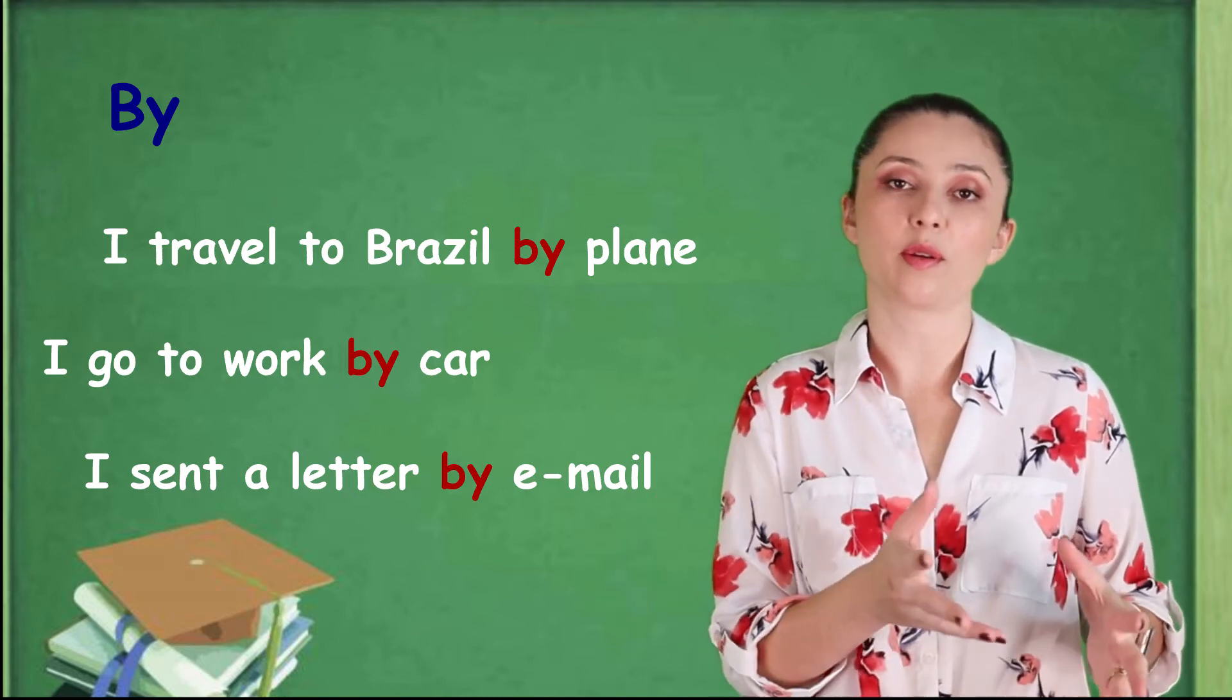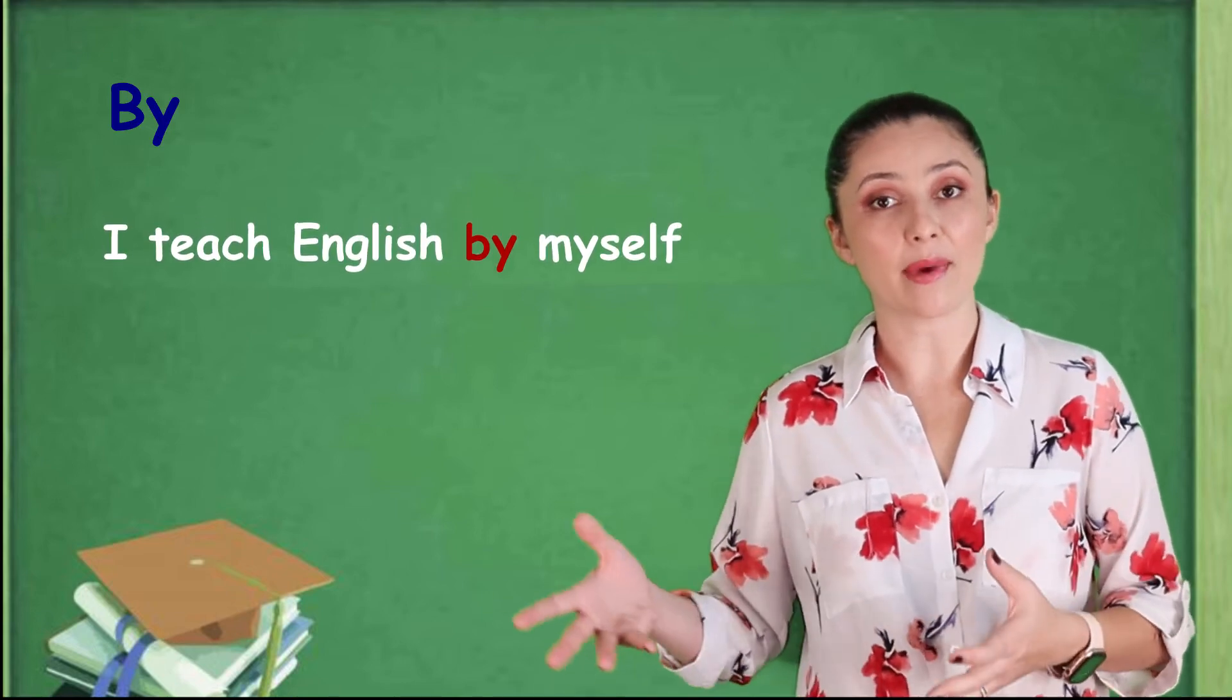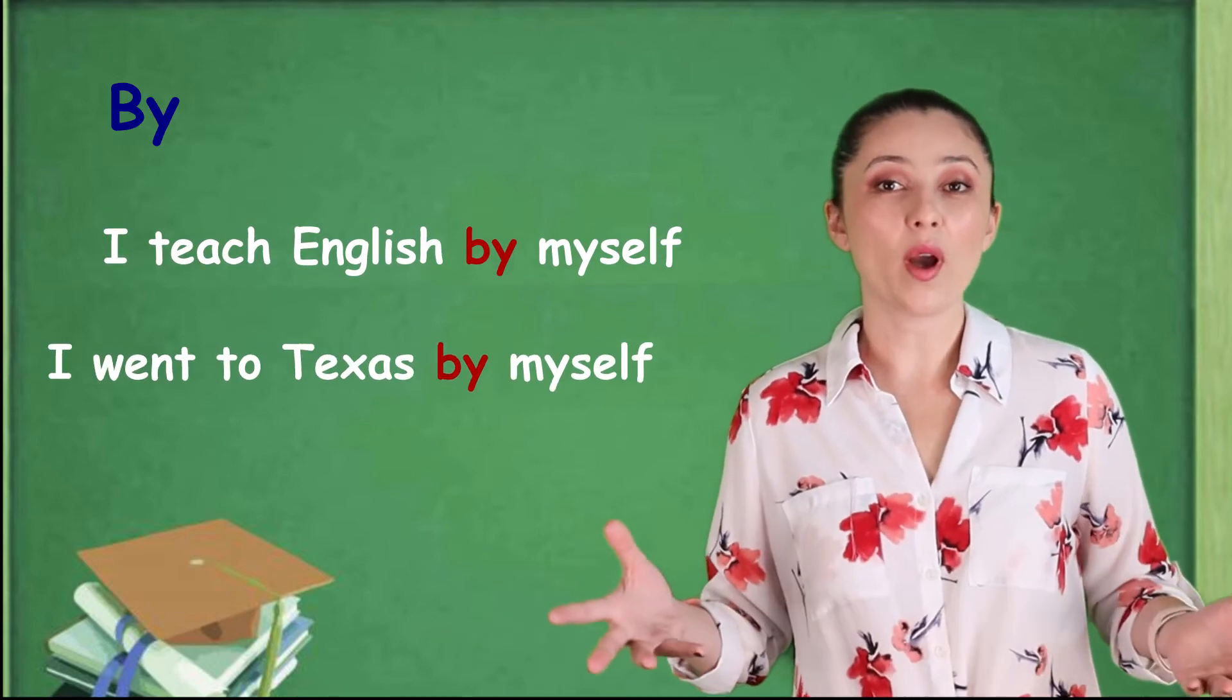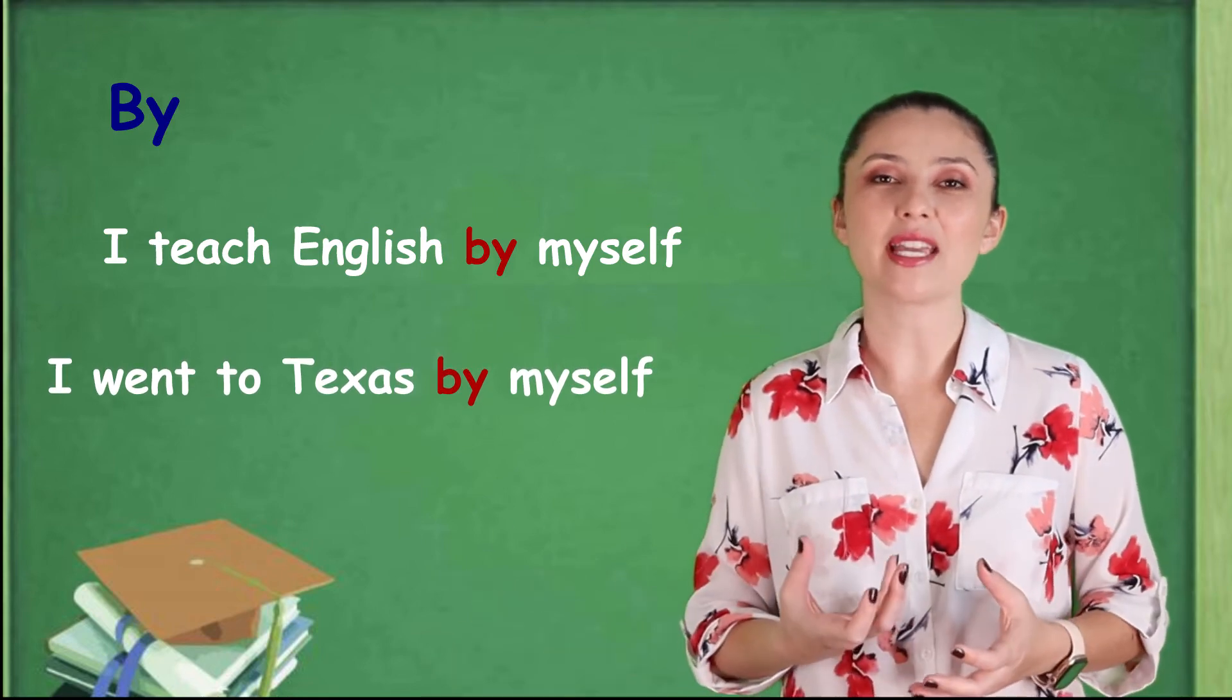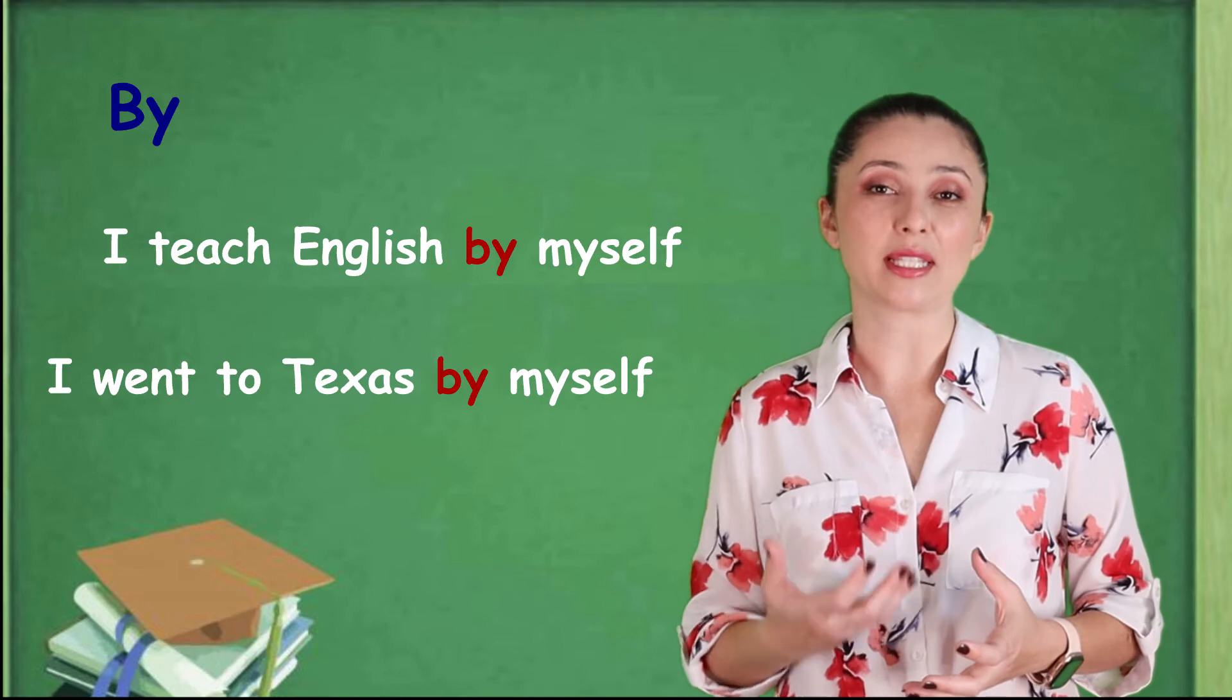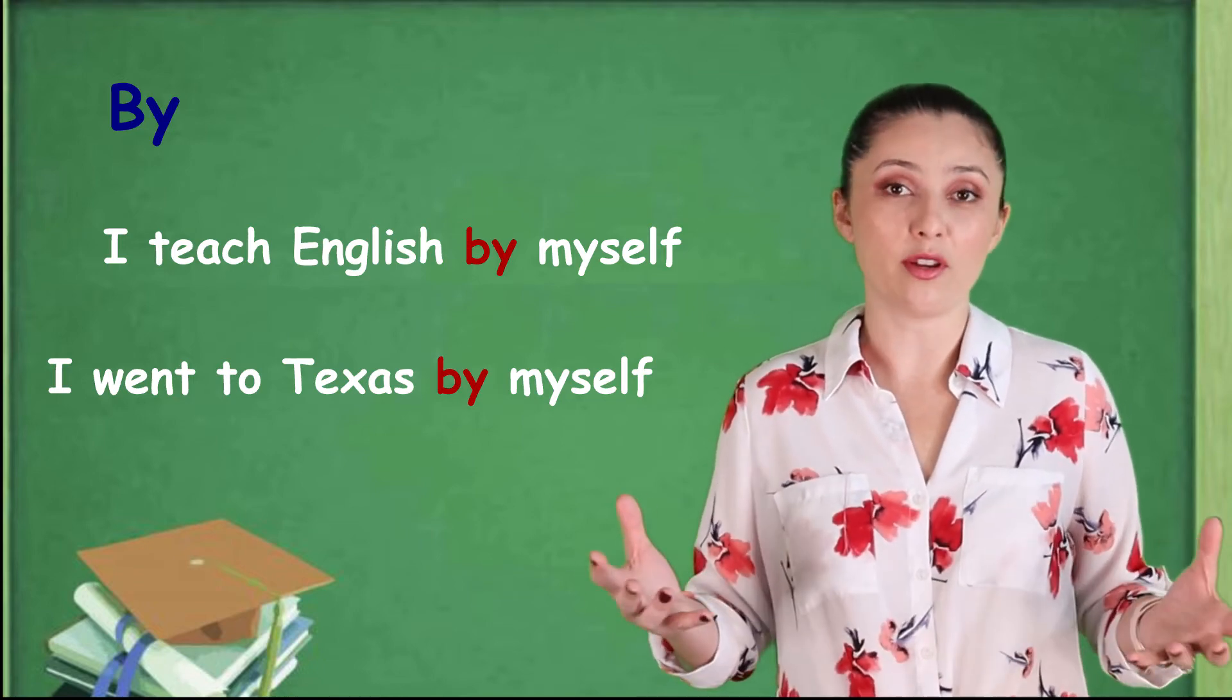So, that's how you can use the preposition by. You can also say by myself, which means alone. On my own. So, I teach English by myself. I went to Texas by myself. So, by here is a preposition. But when we combined to myself, it means alone. On my own. I had no company.